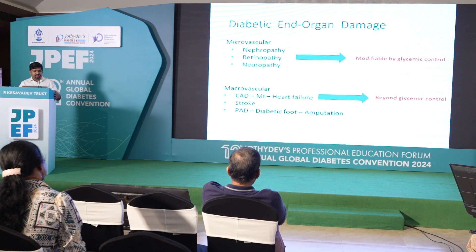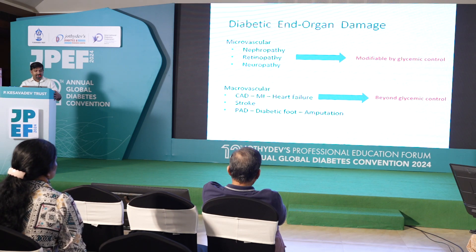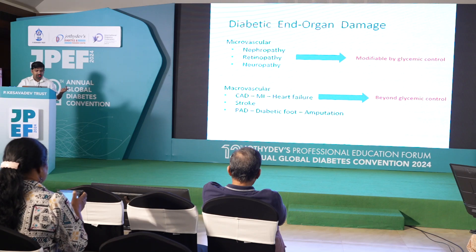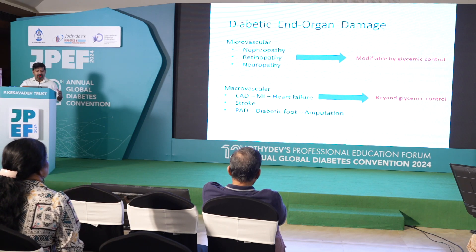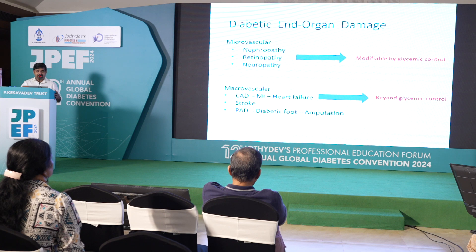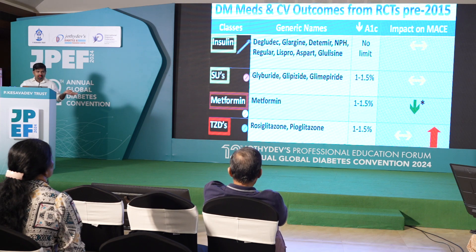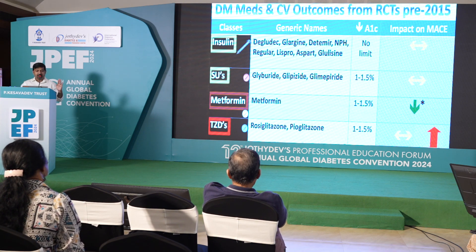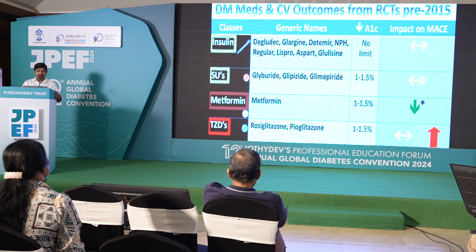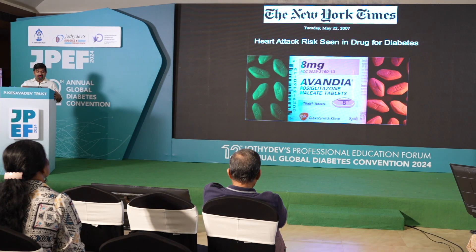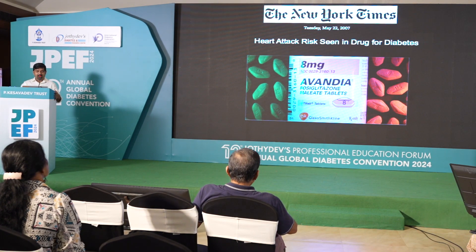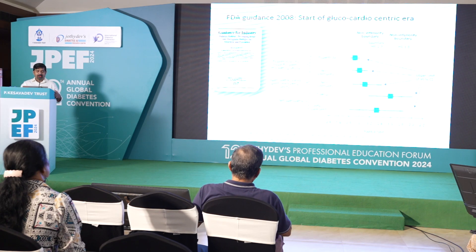Regarding end-organ damage in diabetes — we know that glycemic control can modify your microvascular end-organ damage, which includes neuropathy, retinopathy, and nephropathy. But macrovascular end-organ damage including MI, stroke, and peripheral disease have to be managed beyond glycemic control. We talked about diagnosing coronary disease and treating it. We know that over time, insulin and the older oral hypoglycemic agents do not impact CV mortality.